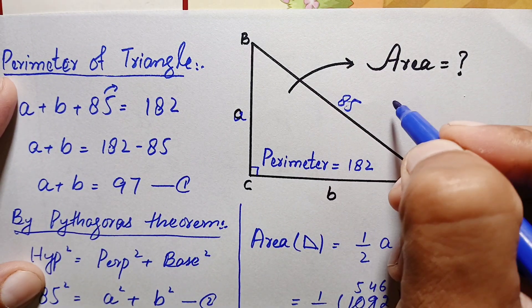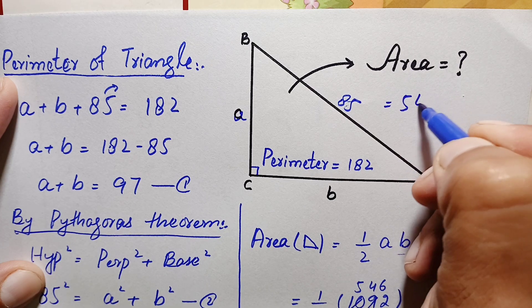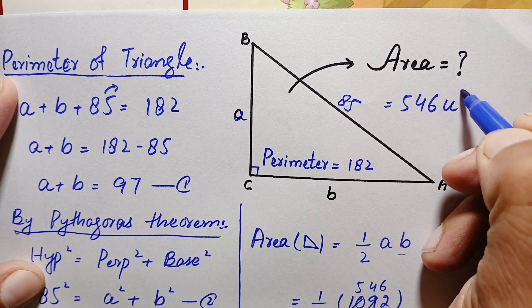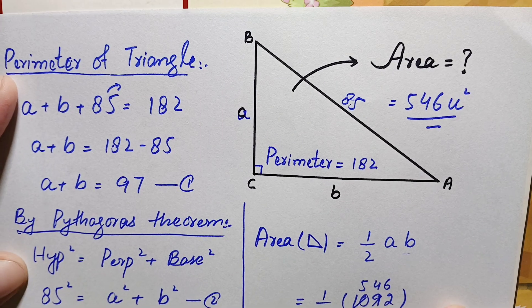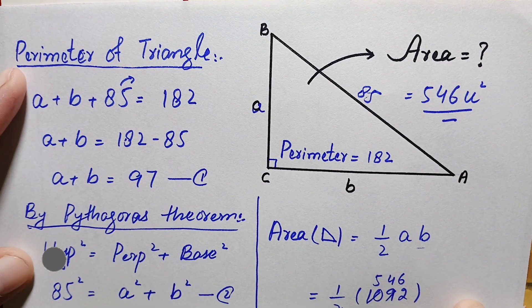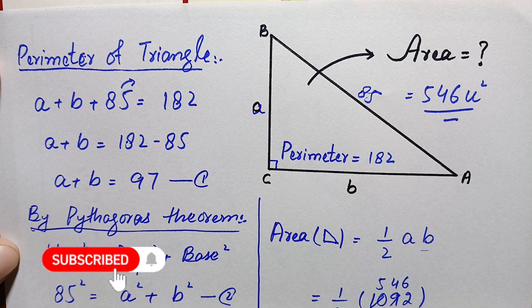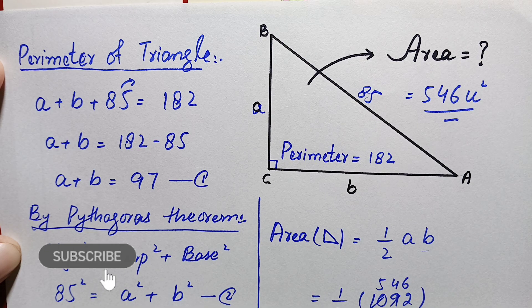So finally, the area of this right angle triangle is 546 square units — that is our final answer. Don't forget to subscribe to my channel for more interesting step-by-step geometry solutions. Thanks for watching.